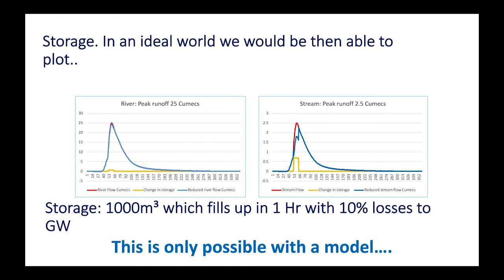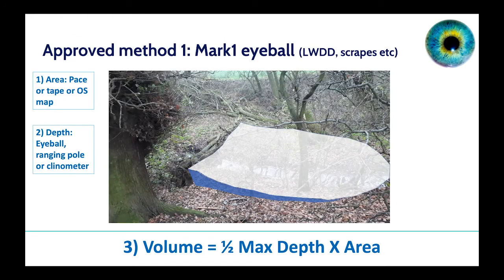Let's look at what is practically possible. The first approved method — and I've gone through these methods with the Environment Agency programme manager to make sure they're all completely acceptable — is the mark one eyeball. It's surprisingly accurate, using very simple techniques like pacing out the area. My pace is 110 paces equals 100 metres, which is actually a surprisingly accurate way of measuring distance. You can also use a tape or an OS map for area; then for depth, a ranging pole, tape measure or clinometer. Volume equals half the maximum depth times the area.